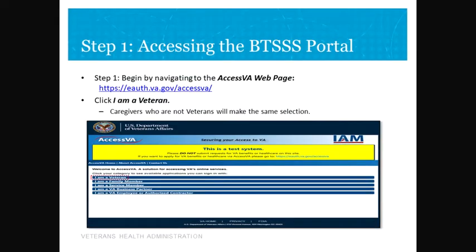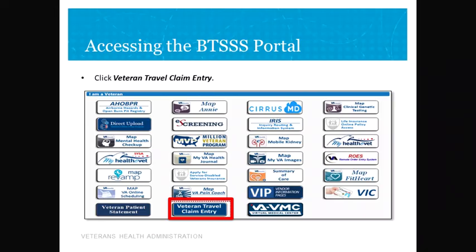To log into the Beneficiary Travel Self-Service System, you'll go to your web browser and type into the address bar eauth.va.gov/accessVA. You'll then choose 'I am a veteran.' Caregivers who are not veterans will also choose 'I am a veteran.' Then you'll select the Veteran Travel Claim Entry icon.